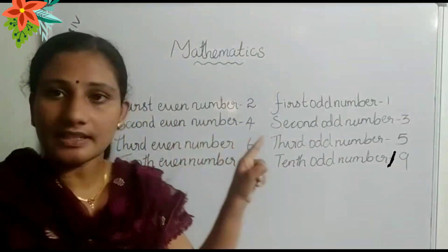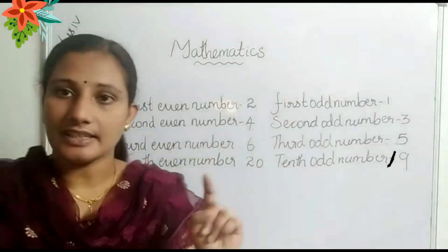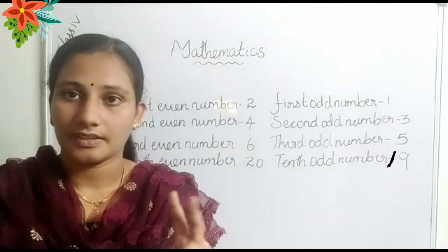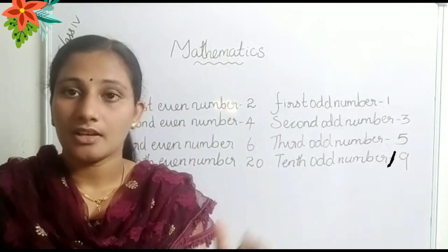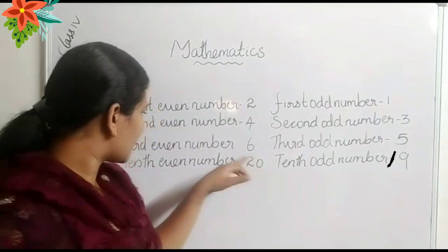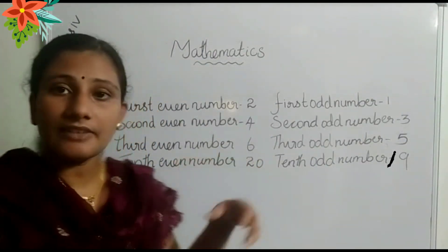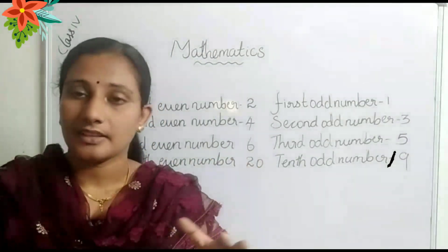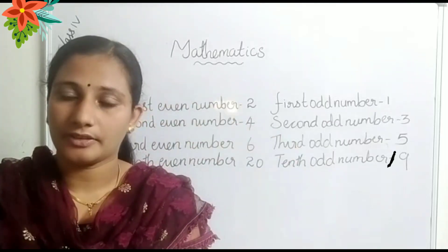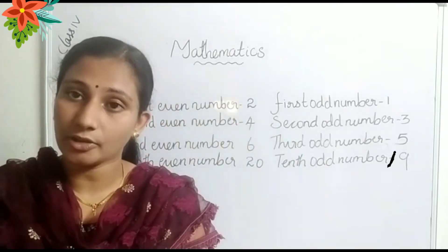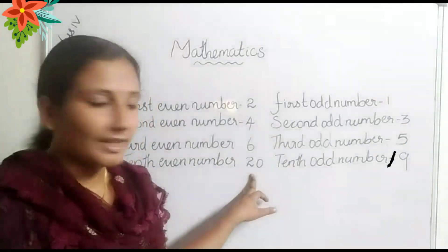So second even number is 4. Then third even number is 6 — the double of 3 is 6. So third even number is 6. Then what about the 10th even number? That is the double of 10. Double of 10 means 10 into 2. 10 two times — that is 20.